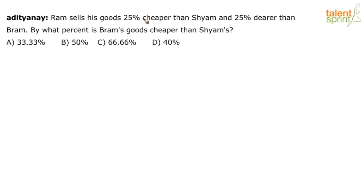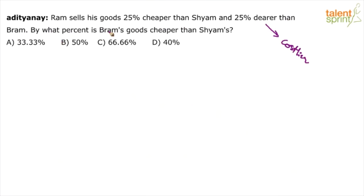Ram sells his goods 25% cheaper than Shyam and 25% dearer — meaning costlier — than Bram. By what percentage is Bram's goods cheaper than Shyam's?